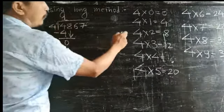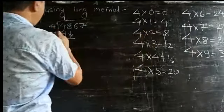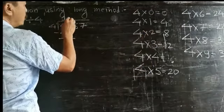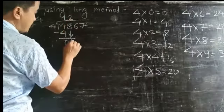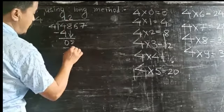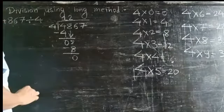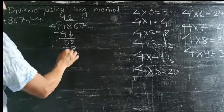4×2=8. Look: 4×0=0, 4×1=4, 4×2=8. Write 2 on top of 8. 4×2=8. 8 minus 8 equals 0. Now bring down this 6.